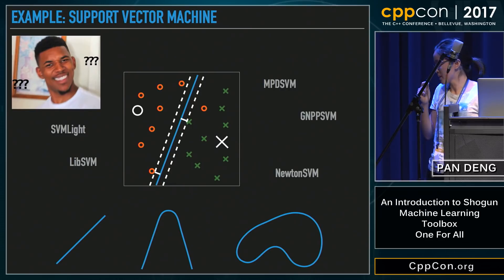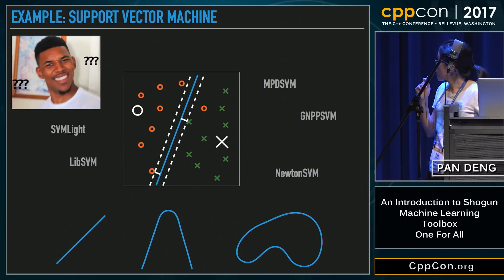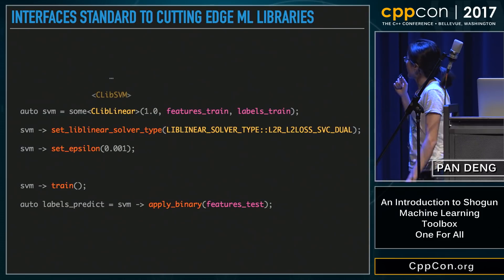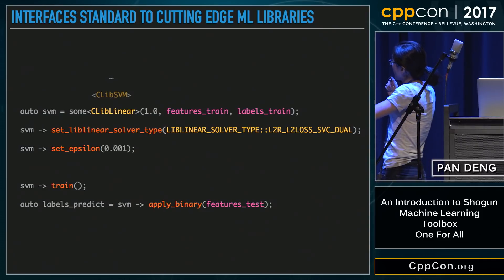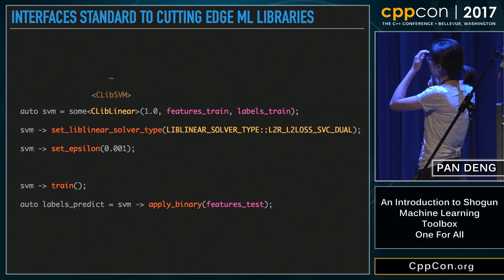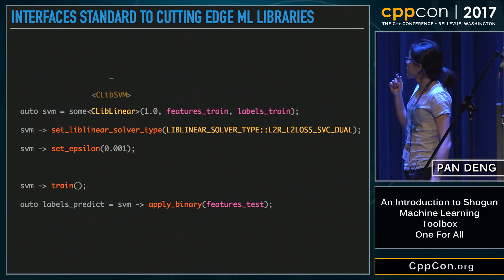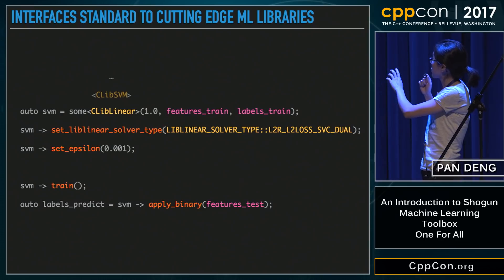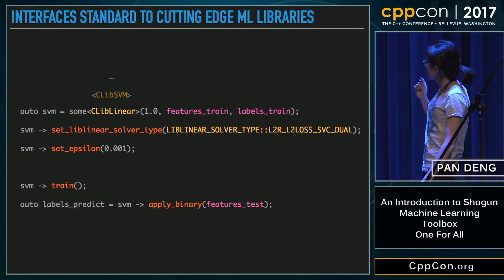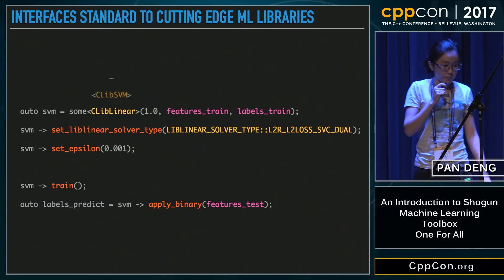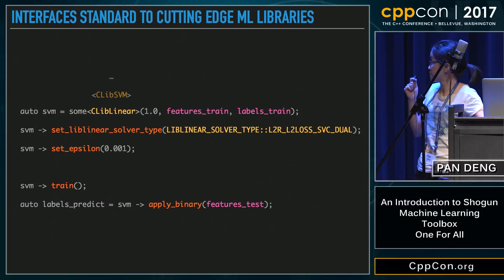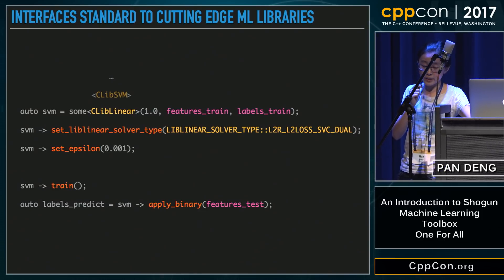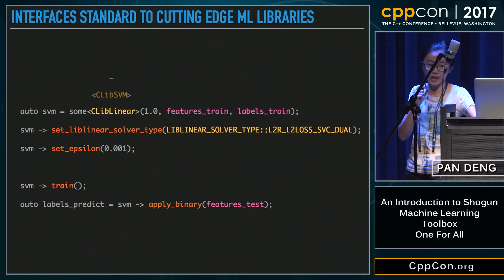You may want to try them out, but the good news is they all come with their own interfaces as well — and this is where Shogun comes in handy. As the code shows, Shogun allows you to initialize an SVM class with different types of SVM algorithms by specifying the template, using a shared pointer. You can also specify the solver type, train the model by calling the train method, and once you apply your test data, you will get the prediction. With this interface, it is pretty easy to compare and try all different kinds of machine learning methods.